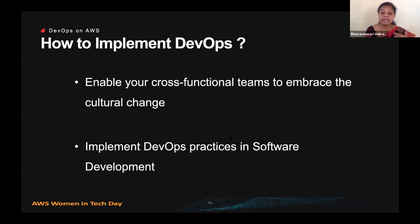To implement DevOps practices in software development, there are a number of practices that help organizations automate and streamline their development, most accomplished with proper tooling. The fundamental practice needed in DevOps is to perform incremental updates very frequently and continuously. This helps teams fix bugs quicker, since they can identify them from the latest deployment that caused the error.